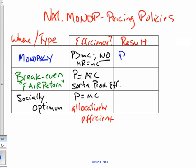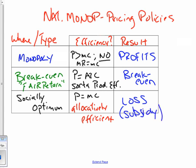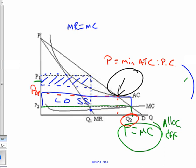In terms of profit and loss: the unregulated monopoly most likely earns profit since price is above average total cost. The break-even price gives a break-even result. The socially optimum price should always result in a loss — if you drew it with a profit, you drew it wrong. The firm stays open in the long run because the local government subsidizes it through taxation or some other means.